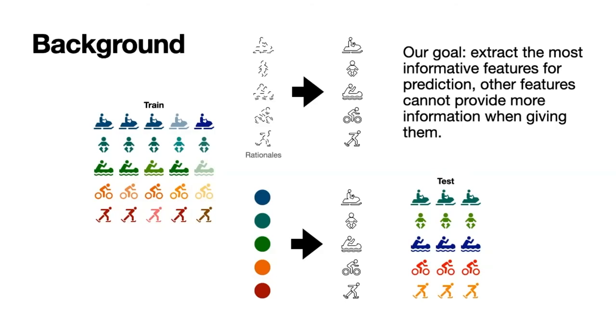In this work, we aim to guide our model to extract the most informative features for prediction, such as the outline in this example. When given the outlines of these objects, colors can now provide more information for prediction. We refer to such features as rationales, which can make all other features independent of the predicted results.